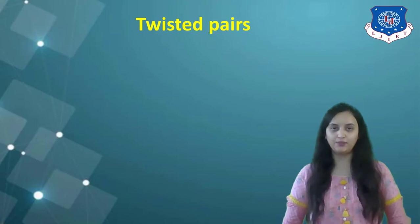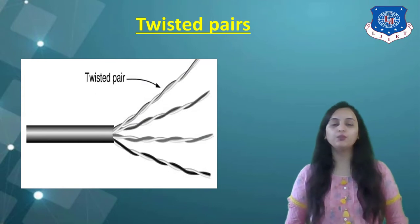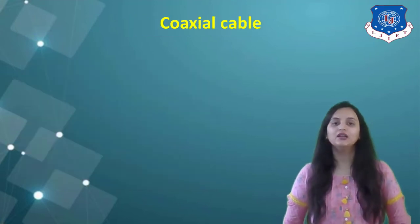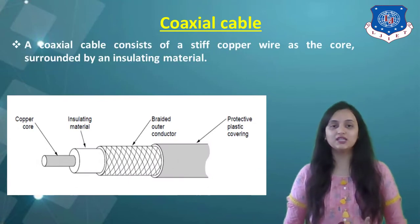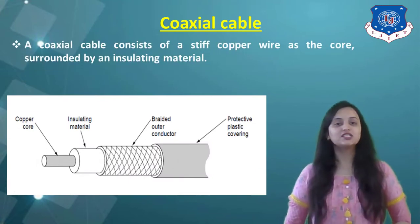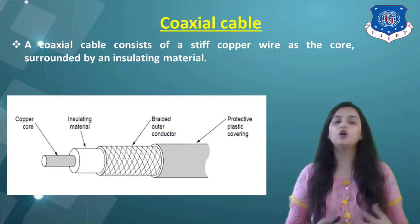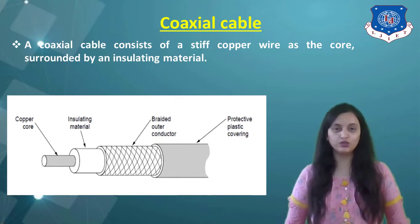Next is twisted pairs. As the name suggests, twisted pair cables are formed by twisting two or more copper cables together, and data transfer takes place through them. Next is the coaxial cable. The coaxial cable consists of a stiff copper wire as the core, surrounded by insulating material. The coaxial cable is shown in a diagram here, and as you can see, the axis is the same for all layers — that is why it is called a coaxial cable.